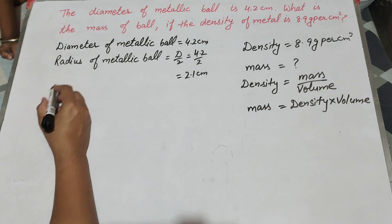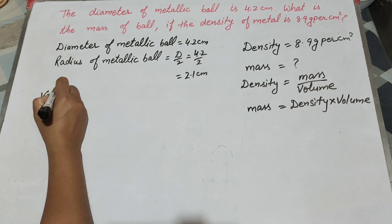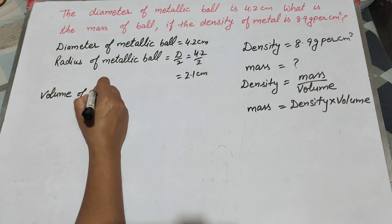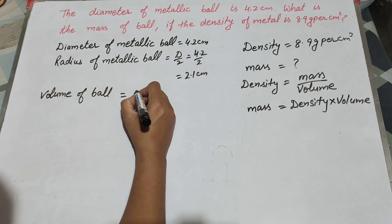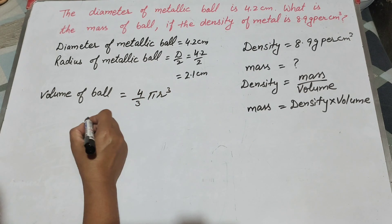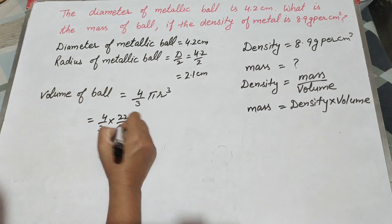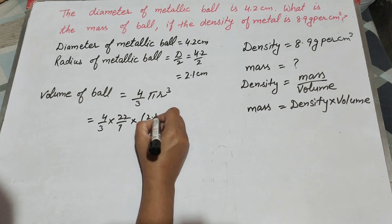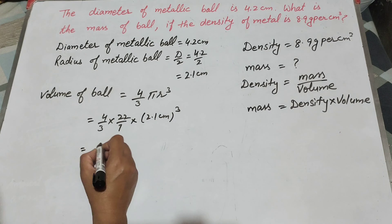To find mass we need to find its volume. Volume of the metallic ball equals 4 over 3 times pi times r cubed, because the ball is a spherical shape, so we use the volume of a sphere. It is 4 over 3 into 22 over 7, with r equal to 2.1 centimeters.